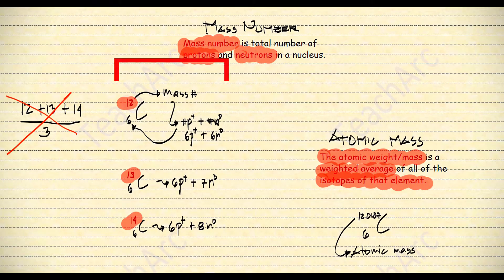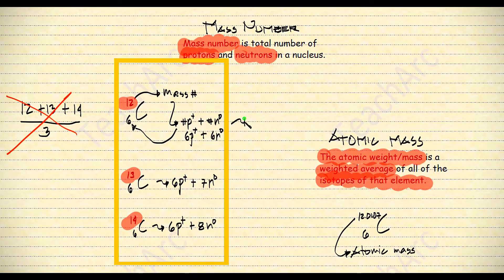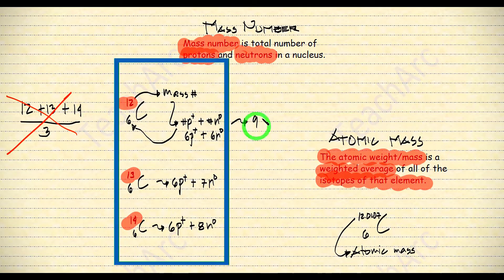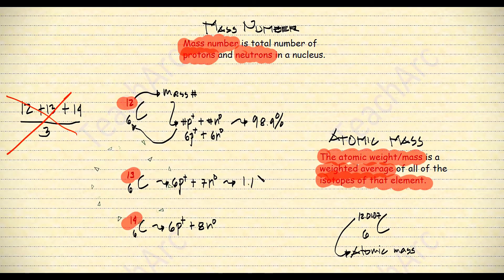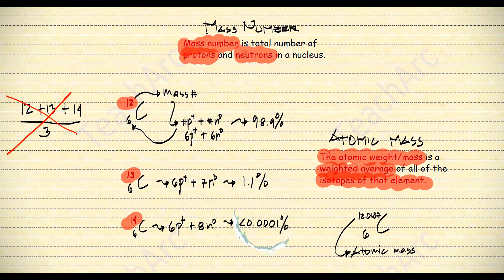These are the naturally occurring isotopes of carbon in the world. Carbon-12 makes up 98.9% of all carbon isotopes if we gather all the carbons in the world. Carbon-13 is around 1.1%, and carbon-14 is very rare — about less than 0.0001% of all carbons.